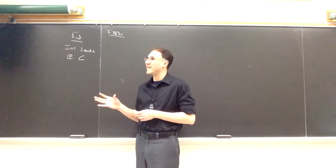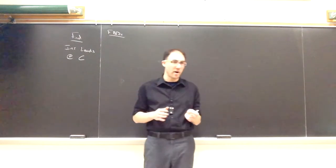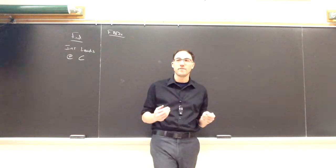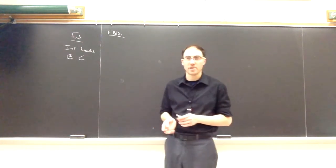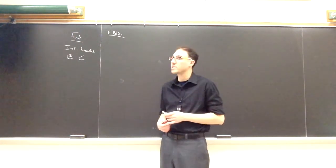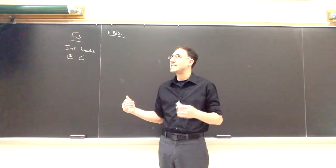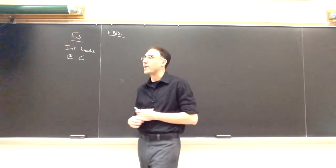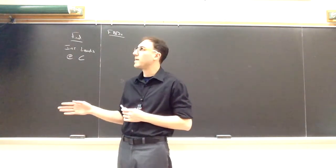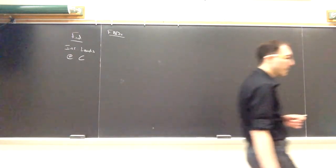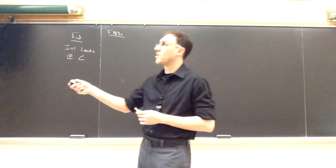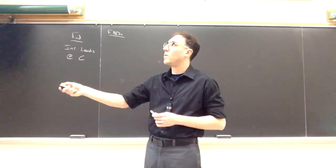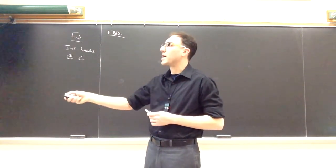So this is the type of problem like we saw in trusses, where usually we started with finding all of those external reactions and then went to our internal cuts for the truss or our pins for the truss. This is the same type of idea is that we can get away without doing an external picture and jump right to our internal picture, because like in 2D, I have the option when I make a cut through my surface to take everything on one side of the cut or everything on the other side of the cut.